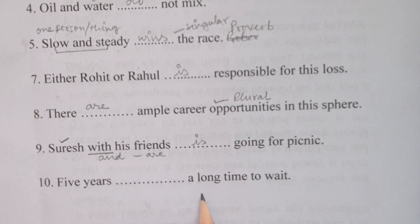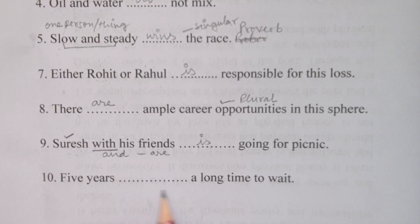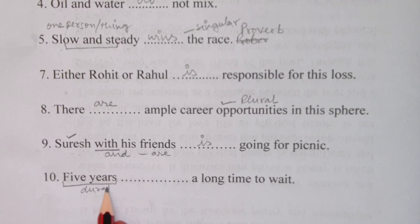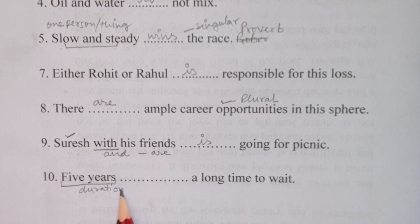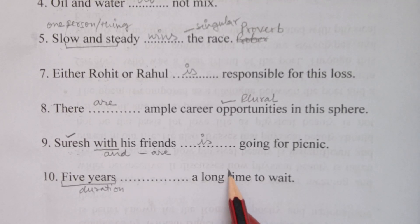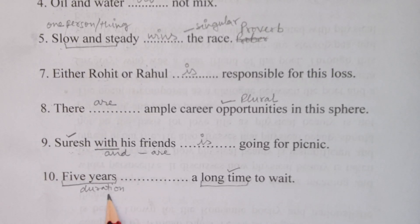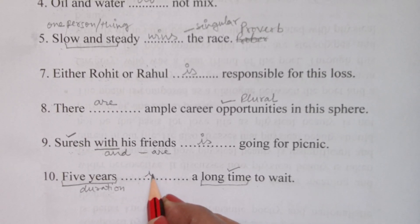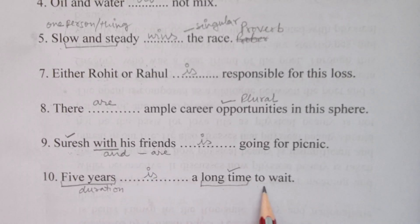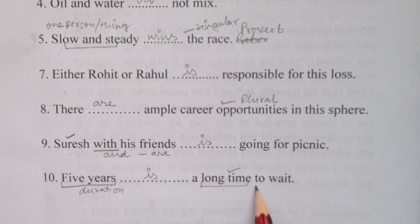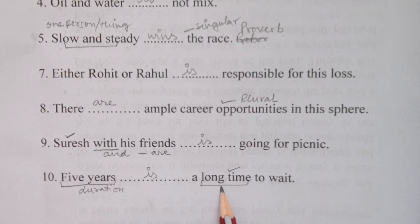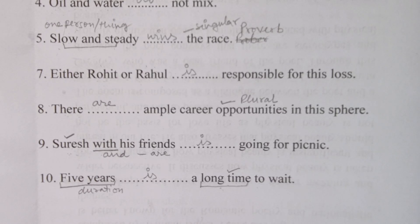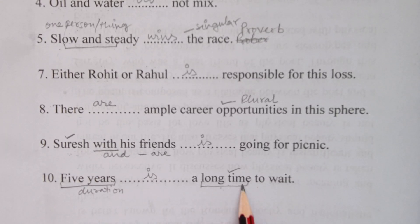'Five years a long time to wait.' Five years is used as a duration here, and the verb will be as per the subject 'long time,' because five years as a duration is a long time for waiting. That is why the verb should be singular 'is': 'Five years is a long time to wait.' We have to see the entire sentence — five years refers to a time period, and we are talking about that time. The main subject is 'long time,' so 'five years is a long time to wait.'